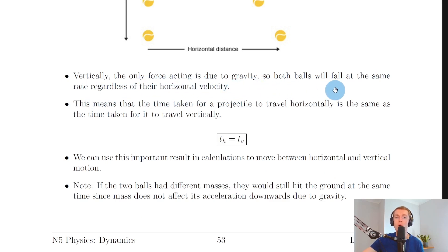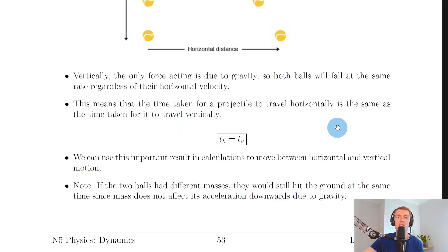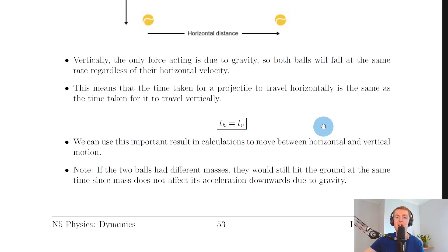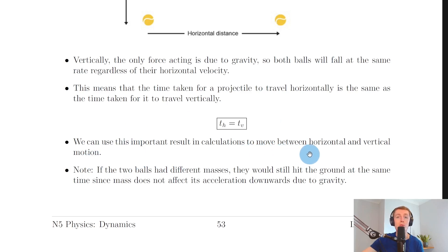Vertically, the only force acting is due to gravity, so both balls fall at the same rate regardless of their horizontal velocity. This means the time taken for a projectile to travel horizontally is the same as the time taken to travel vertically. We can write that t_h (horizontal time) equals t_v (vertical time), and this is a key result we can use in calculations to move between horizontal and vertical motion.